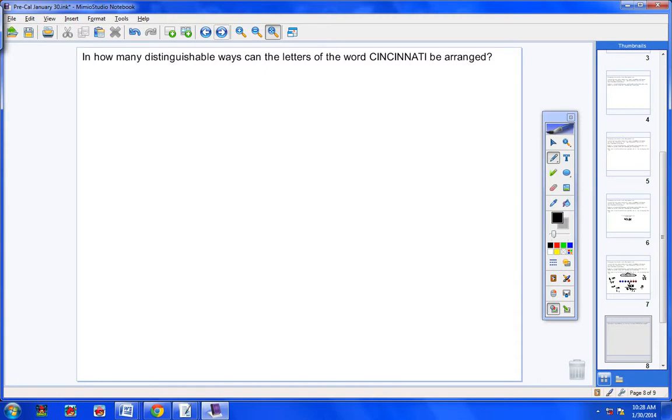Go ahead and copy this in your notes, please. In how many distinguishable ways can the letters of the word Cincinnati be arranged? Now, if I had not asked for a distinguishable, then you would do it the old way. The old way would be 1, 2, 3, 4, 5, 6, 7, 8, 9, 10. So you'd have 10 blanks. Of course, the first blank you have 10 options, the next blank 9, the next blank 8. So your answer would simply be 10 factorial. But we're not asking for you to do it the old way. I'm asking you to tell me how many distinguishable ways can the word Cincinnati be written.